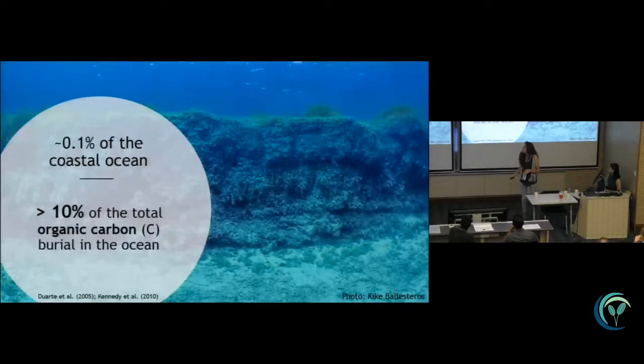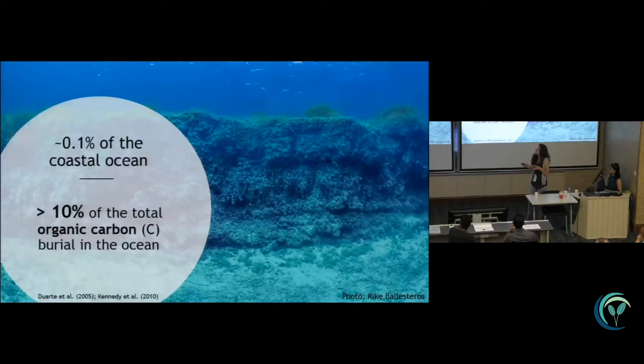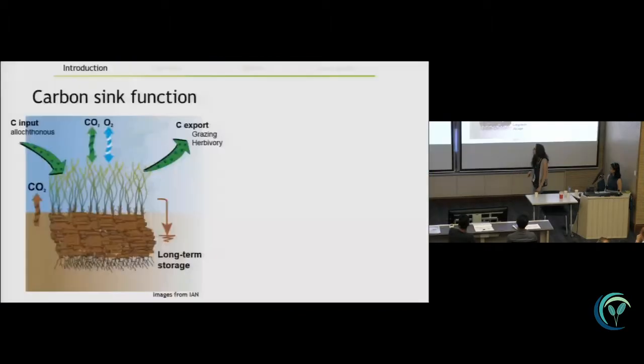Seagrass meadows are increasingly being credited with burying large amounts of carbon in their sediments. Although they cover a relatively small portion of the coastal ocean, their carbon sequestration contribution is estimated to be over 10% of the total carbon burial in the oceans.